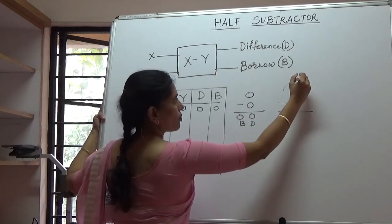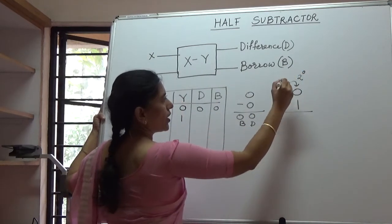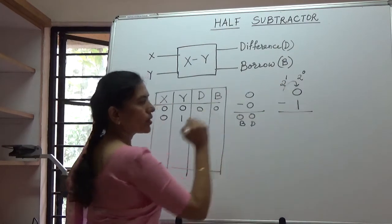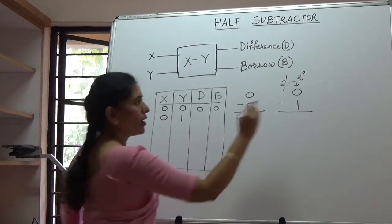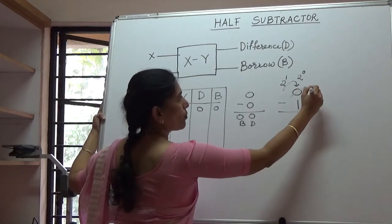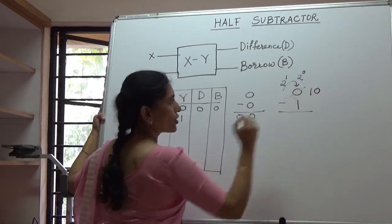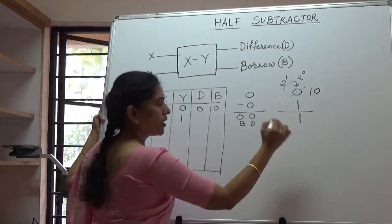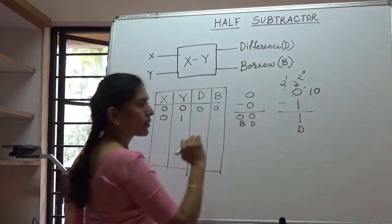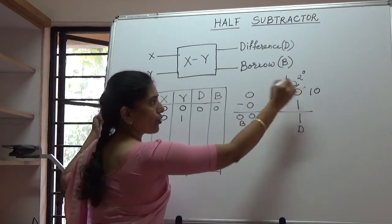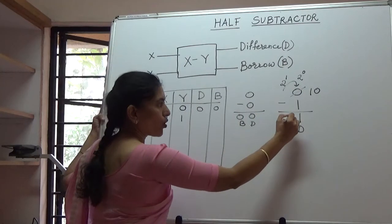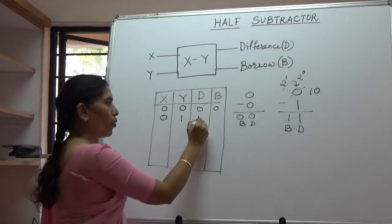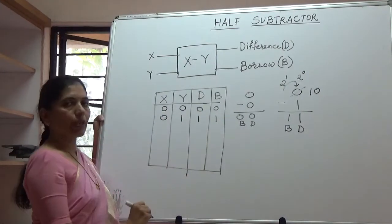This 0 is at a position of 2 raise to 0, the next position is that of 2 raise to 1. So a 1 is borrowed from the position of 2 raise to 1 and therefore this bit now becomes 1, 0 which is actually a 2 and therefore 2 minus 1 is 1. So the difference is 1 but a bit was borrowed from higher position, so the borrowed bit is also 1. Hence, the output of both D and B will be 1, 1.